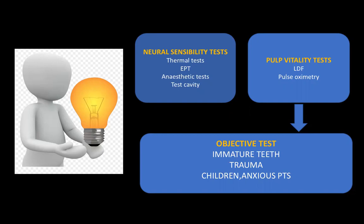To conclude, to assess the status of the pulp we have different tests, including neural sensibility tests and pulp vitality tests. Pulp vitality tests give information about the blood supply within the tooth. The two most common pulp vitality tests are laser Doppler flowmetry and pulse oximetry. Their advantages include being objective tests that do not rely on the patient's response. They are particularly useful in immature teeth, in cases of trauma, in children, and in anxious patients.